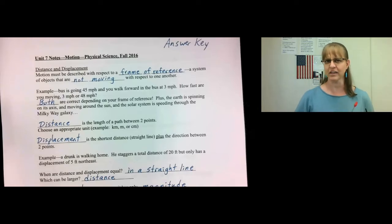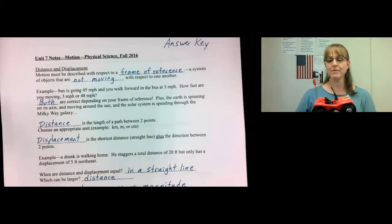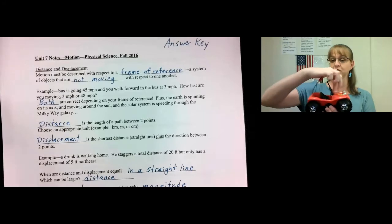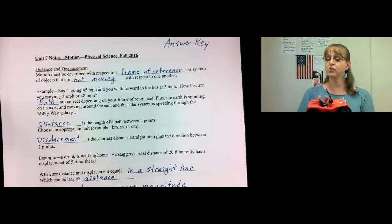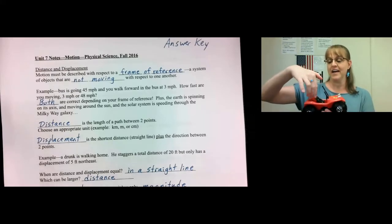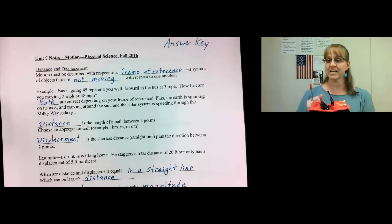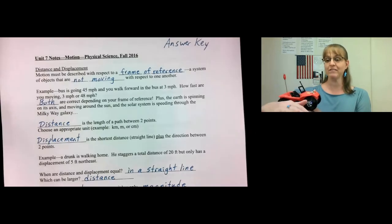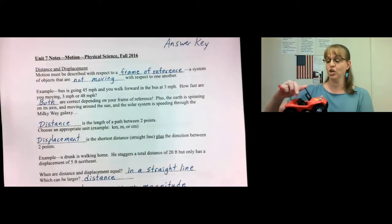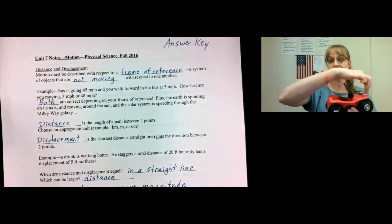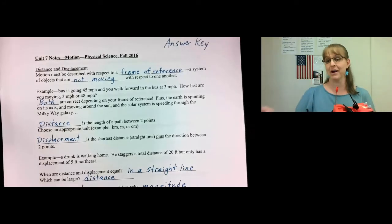So how fast are you moving? Well, there are actually two correct answers. If your frame of reference is the bus, compared to the bus you are going 3 miles per hour — you assume the bus is staying still and you are moving inside of it. But if your frame of reference is the ground outside the bus, the ground is staying still, the bus is moving, you're moving even faster than the bus, and together, compared to the ground, you're moving 48 miles per hour — 45 plus 3 miles per hour.